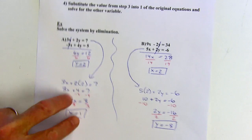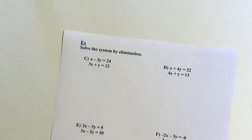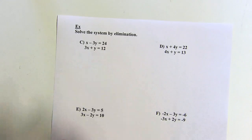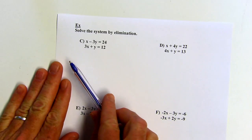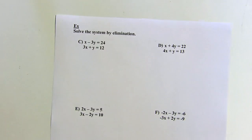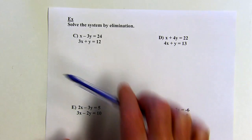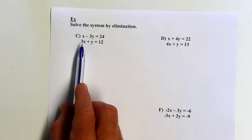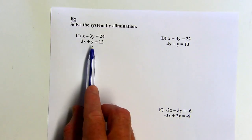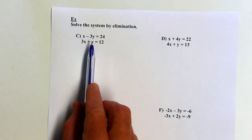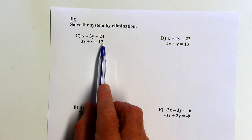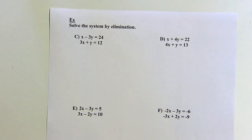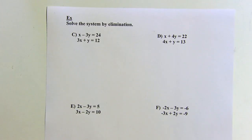The next set of problems are a little more difficult. Looking at this next system, if you were to add these together right now, neither the x's nor the y's would cancel. Also, make sure your two equations are lined up with the x's, the y's, then the equal signs, then the constants. If they aren't lined up like that, you might have to shift some things around first.